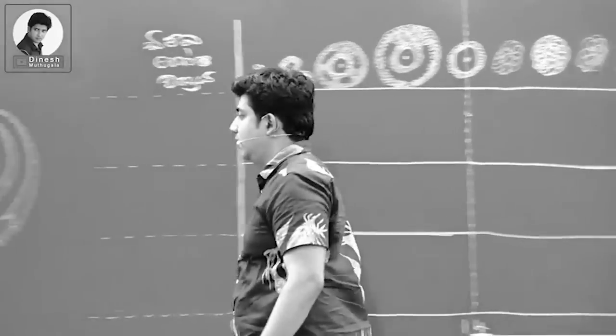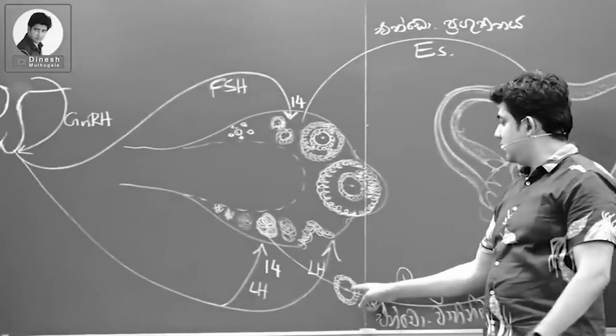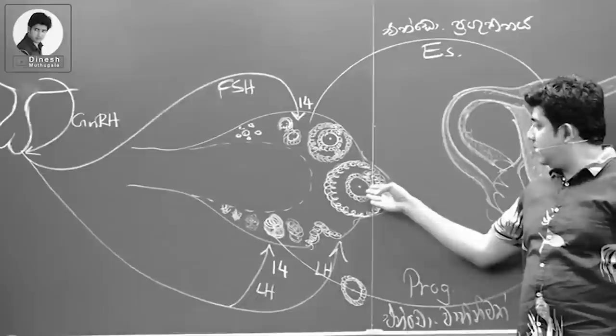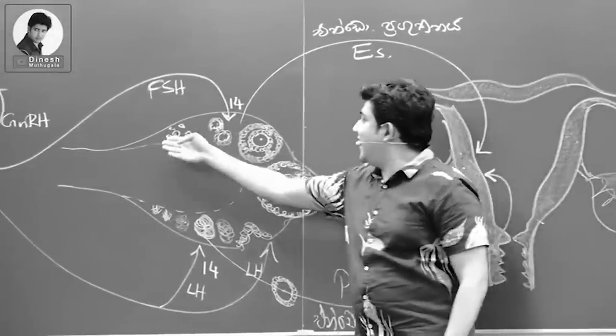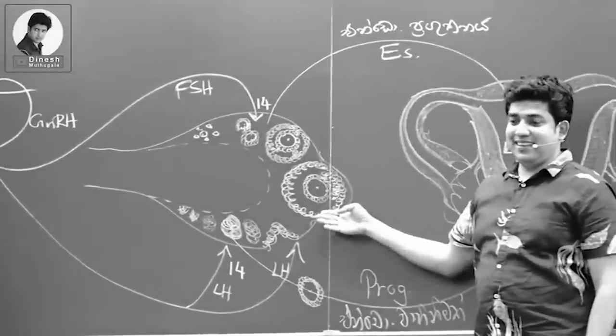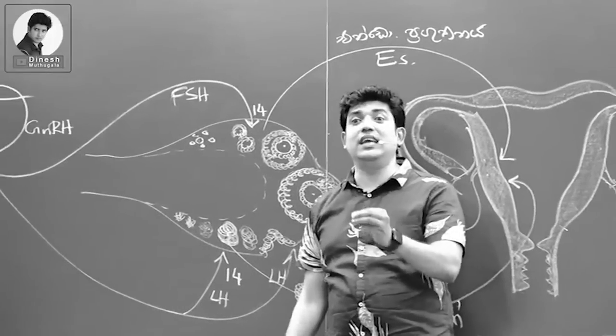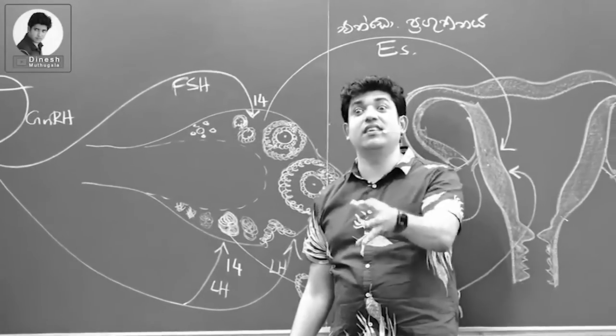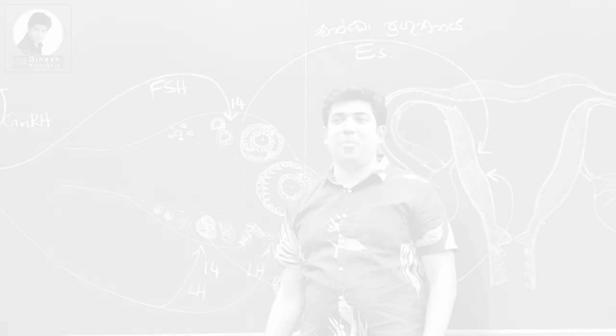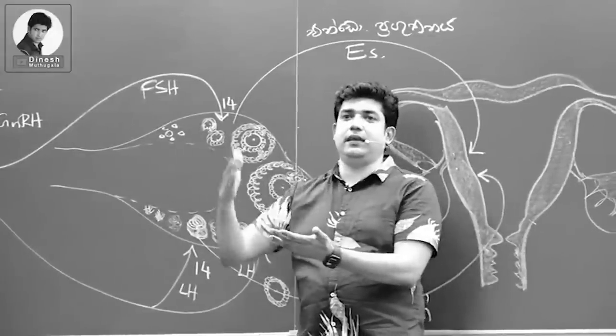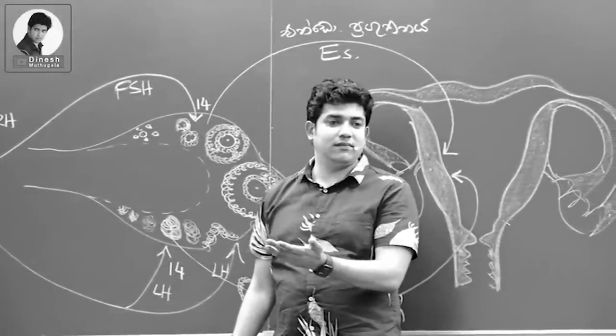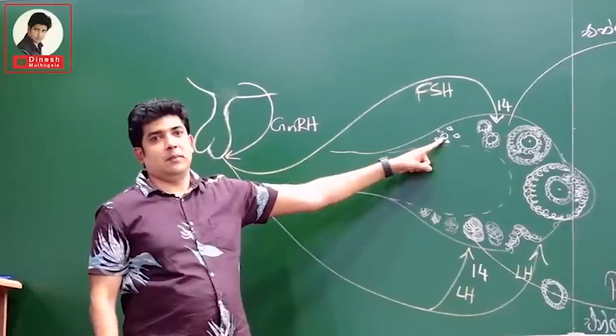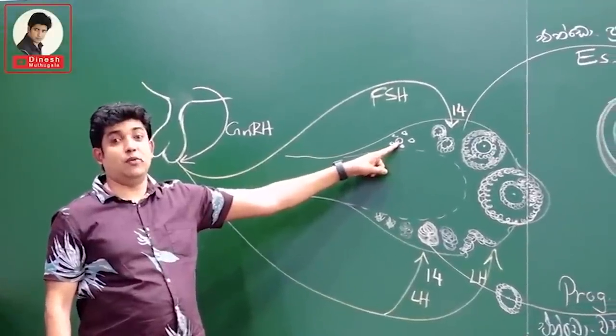Then the menstrual cycle. The calendar shows the different phases - how many days each phase lasts. The characteristics of estrogen and other hormones vary at different stages. This is the follicle development stage.